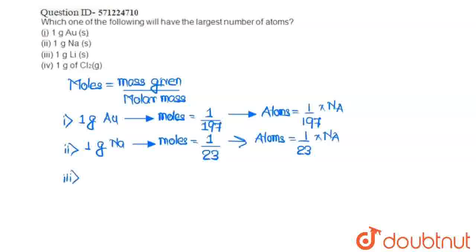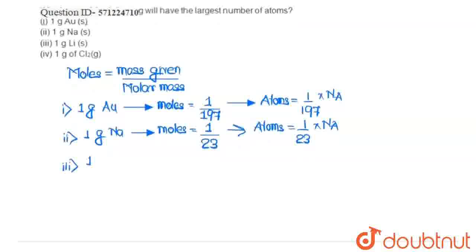In the third option, we have 1 gram lithium. So, if we calculate the moles of lithium, the molar mass of lithium is 7. 1 gram is given to us, then 1 by 7 is the number of moles of lithium.